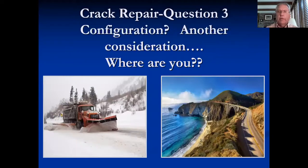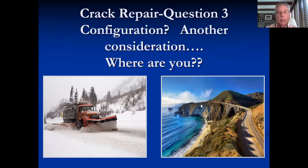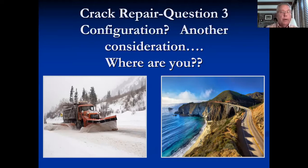Another question as far as the configuration is concerned: where are you? If you're in an area like New York — especially upstate — and you have a very thick overband, you run the risk of the plow pulling it right out of the crack. Whereas on the right here, this is Big Sur in California — I seriously doubt a snow plow has ever seen that road — so you could overband there, certainly.